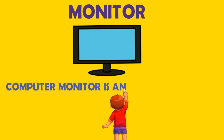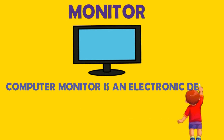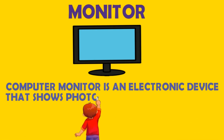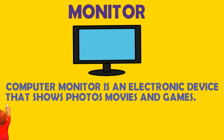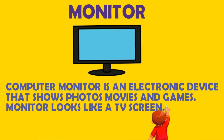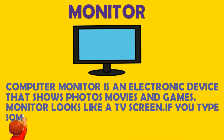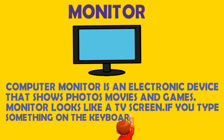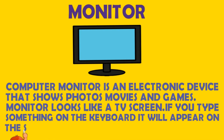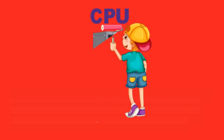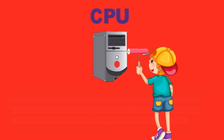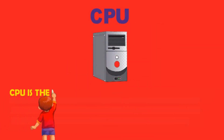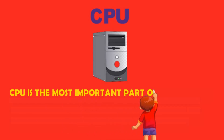Monitor. A computer monitor is an electronic device that shows photos, movies, and games. A monitor looks like a TV screen. If you type something on the keyboard, it will appear on the screen.